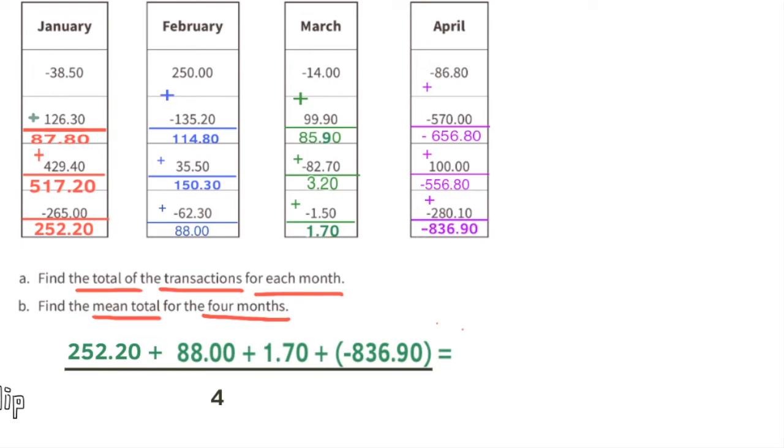made a final withdrawal of $280.10, leaving the ending balance in April at a negative $836.90. Part b: Find the mean total for the four months. The mean total for the four months is negative $123.75, because $252.20 plus $88 plus $1.70 plus a negative $836.90, divided by four, equals a negative $123.75.